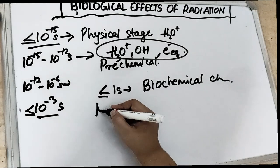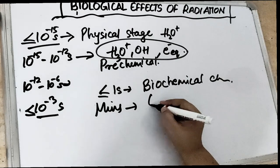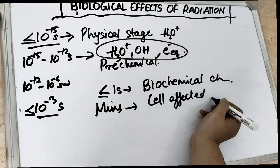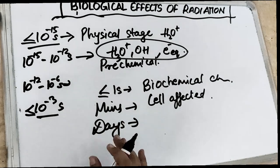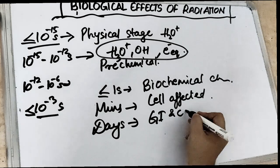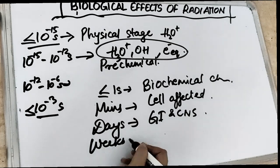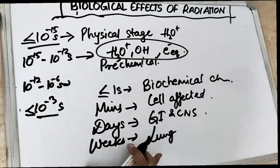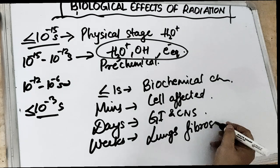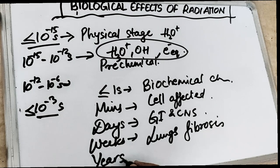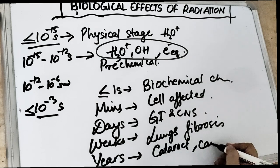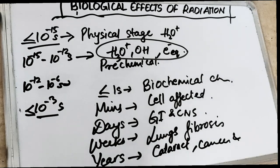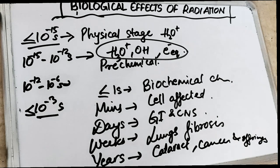If the radiation exposure extends to minutes, cell division gets affected. If it continues up to days, the GI tract and CNS are affected. If it continues for weeks, lung fibrosis occurs because the radiation is in the air. If exposure extends to years — like in Hiroshima and Nagasaki — there will be cataracts, cancer, and genetic effects visible in offspring, as DNA changes will affect future generations.